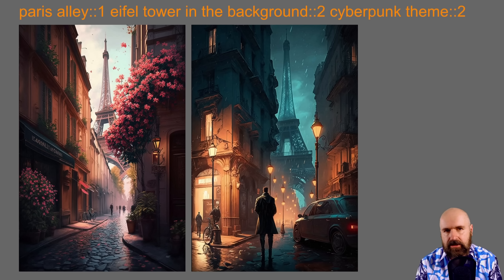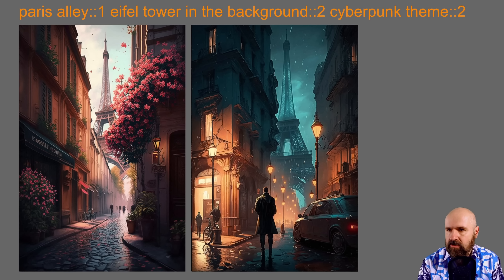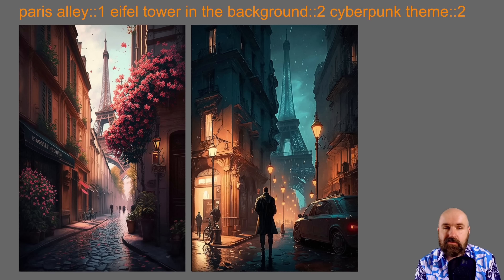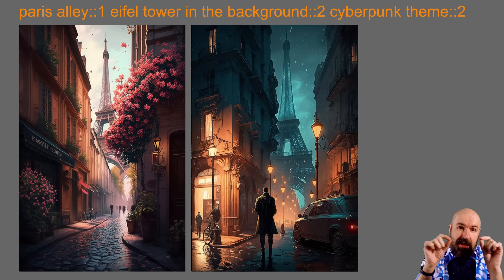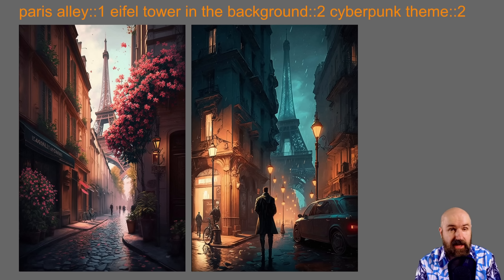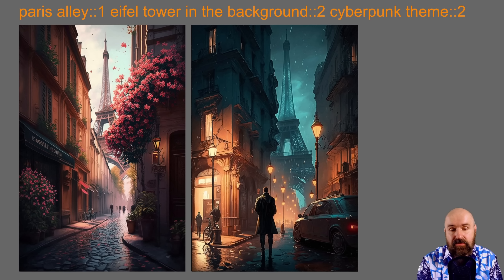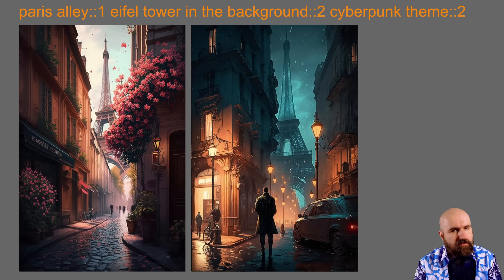Here's an alternative to bring back Paris and the Eiffel Tower. The prompt is: Paris alley colon-colon one, Eiffel Tower in the background colon-colon two, cyberpunk theme colon-colon two. The way to understand these weights is you add them all together — two plus two plus one equals five — and each part takes its relative weight in that total. What we get is the alley with a big Eiffel Tower in the background, because the Eiffel Tower is twice as strong as the alley, plus the cyberpunk theme colors. I'm pretty happy with this.